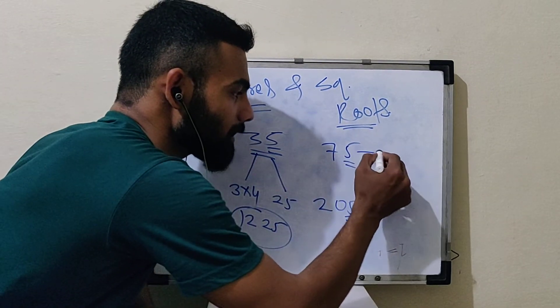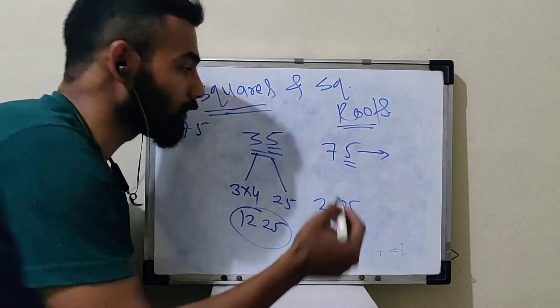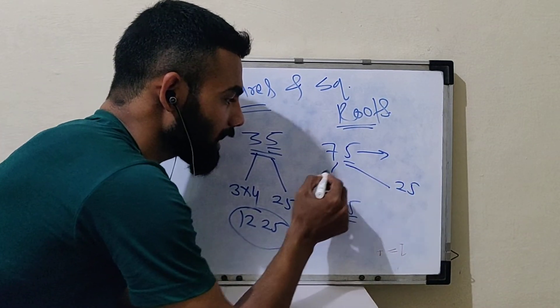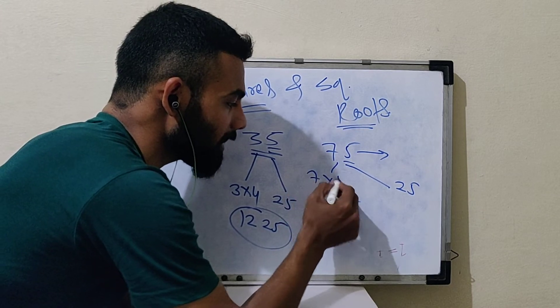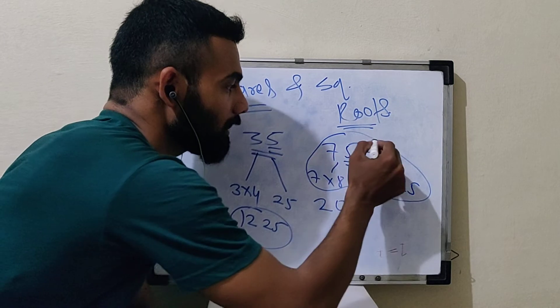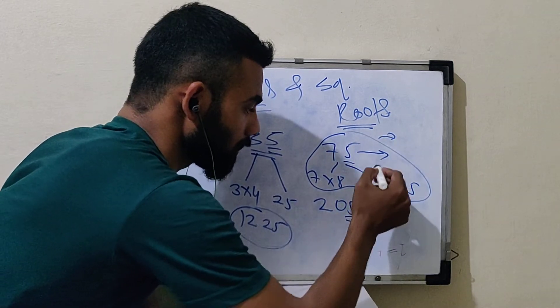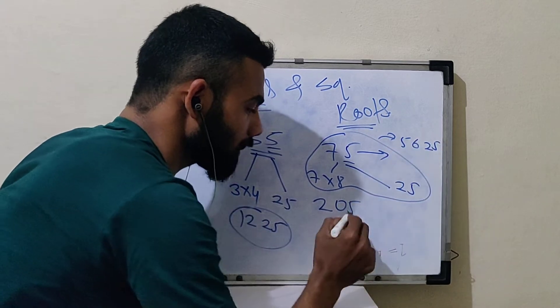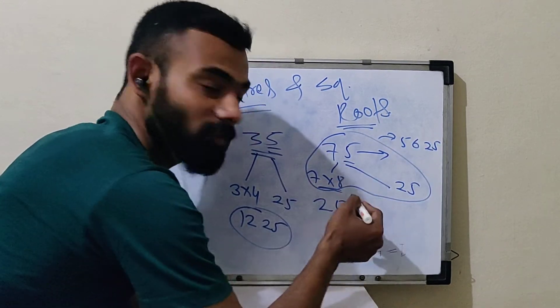In this case, what do we do? The same method you have to follow. 5 square is 25. What do we do here? 7 multiplied by 8. What will be the square of 75? It will be 56 and 25. 7 times 8 is 56 and 25.